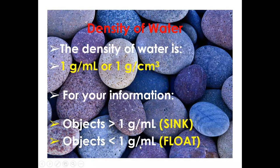The density of water is 1 g/mL or 1 g/cm³. Any object with a density greater than 1 g/mL will sink, and any object with a density less than 1 g/mL will float. Thank you for watching — study hard for the next quiz!